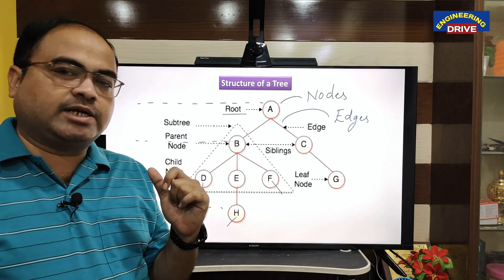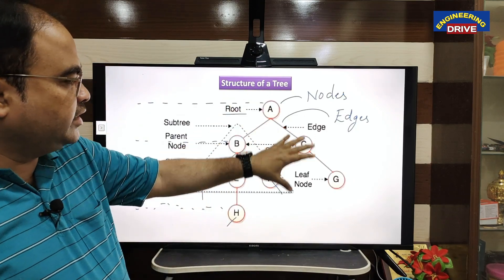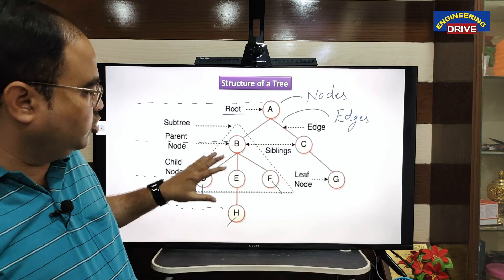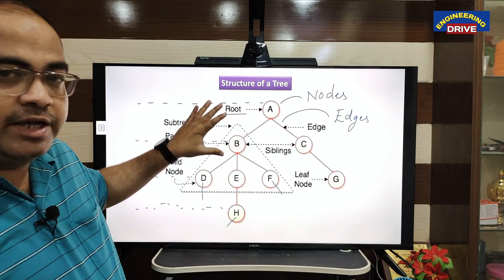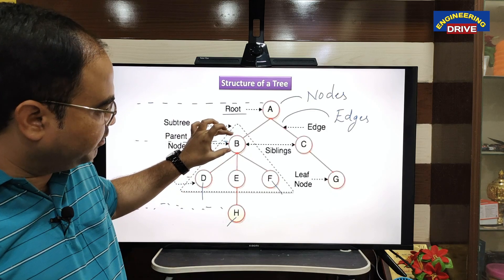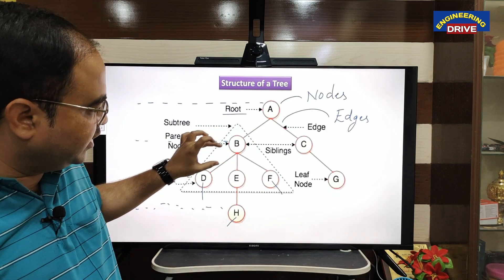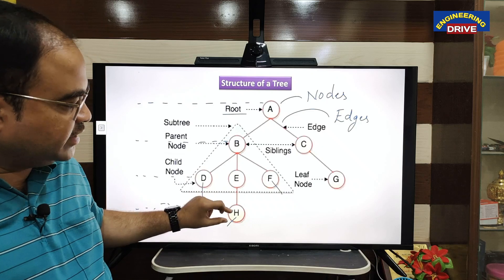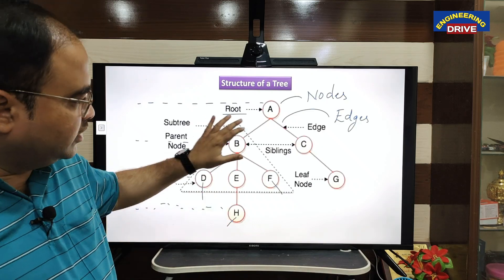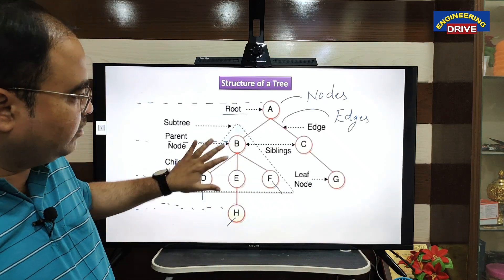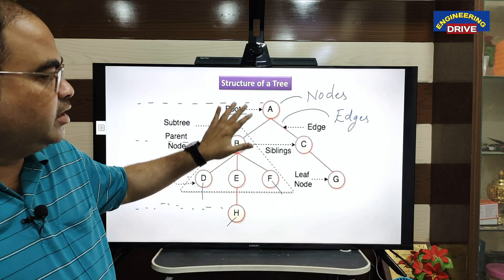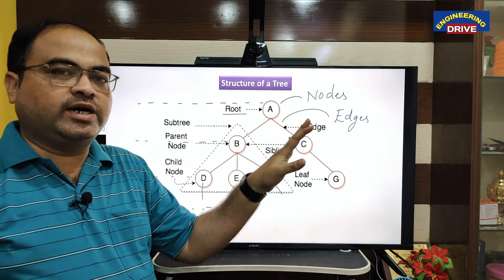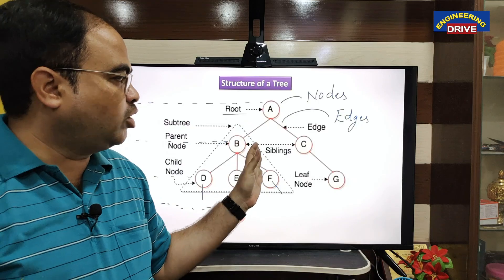One more important thing in tree terminology: a tree can consist of sub-trees also. Here you can see this sub-tree — the parent node B is having child nodes D, E, and F, and again E is having one child node H. So this forms one sub-tree within the larger tree.